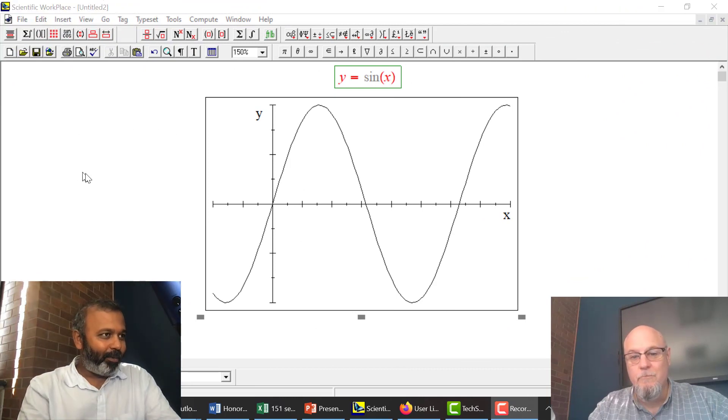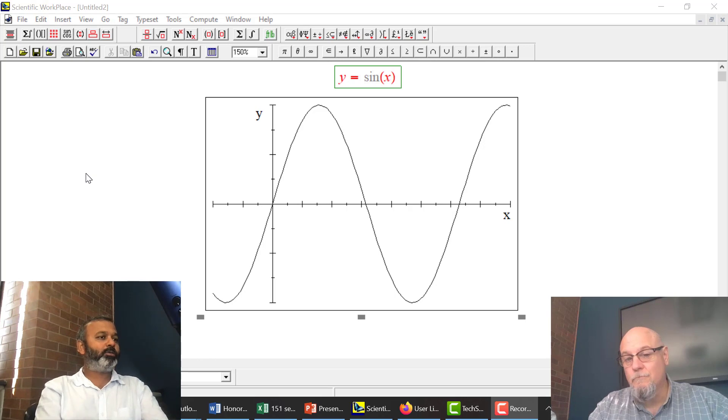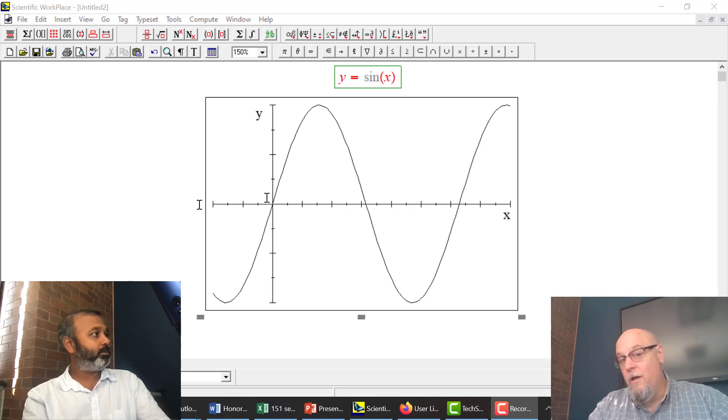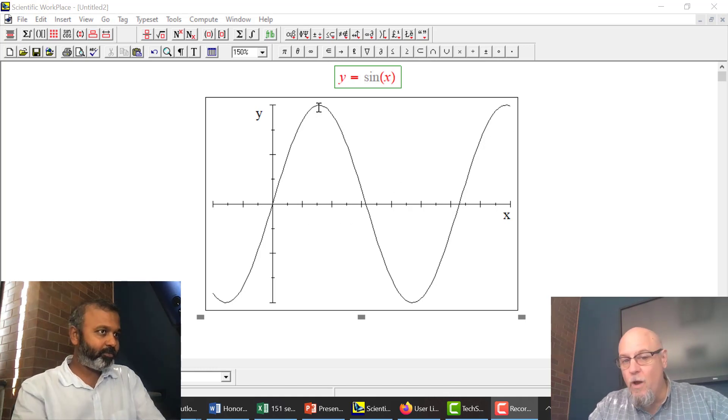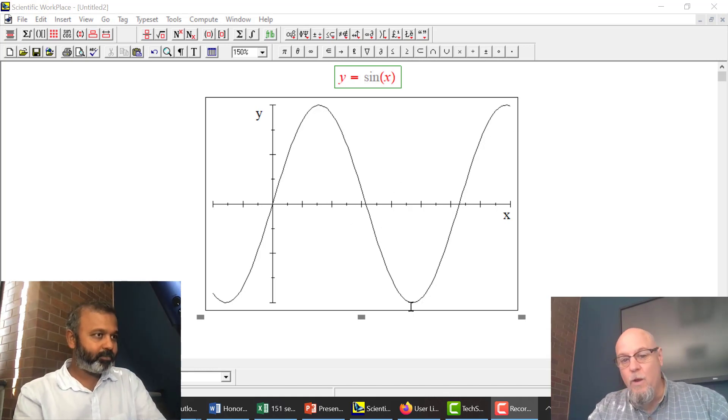Alright, so let's talk about graphs. If we change the input for the sine function as a multiple of x, how does the graph behave? I put on the screen here, this is just regular plain vanilla y equals sine x. We know it goes up to 1, we know it goes down to minus 1, and we know that the wavelength is 2π.